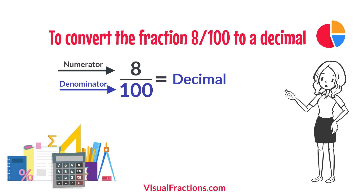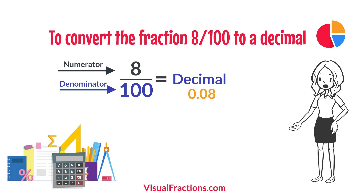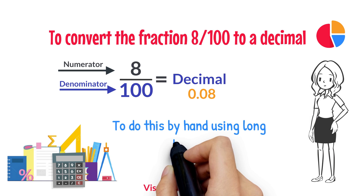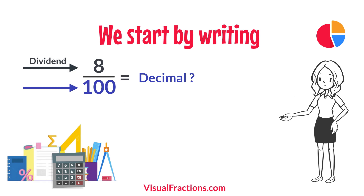The answer we get is 0.08. To do this by hand using long division, we start by writing 8 as the dividend and 100 as the divisor.